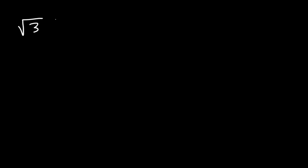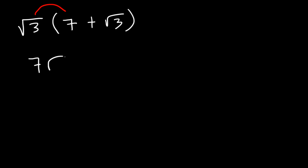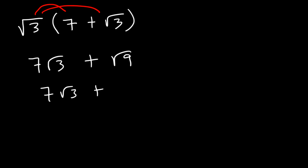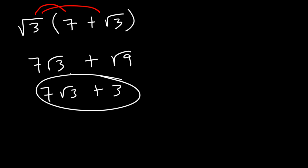If you see a problem like root 3 times the quantity 7 plus root 3, you need to distribute. Root 3 times 7 is simply 7 root 3. And root 3 times itself: 3 times 3 is 9, so that's the square root of 9, which is 3. So the answer is 7 root 3 plus 3. You just have to distribute.